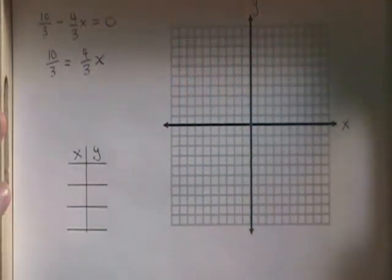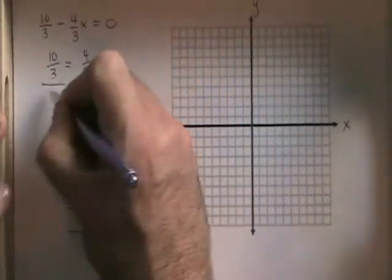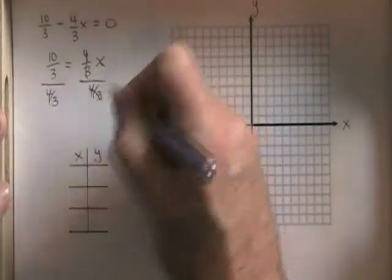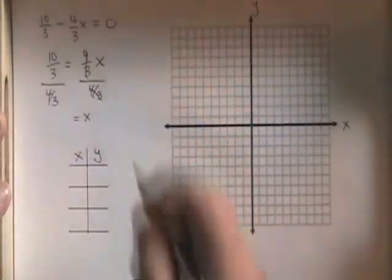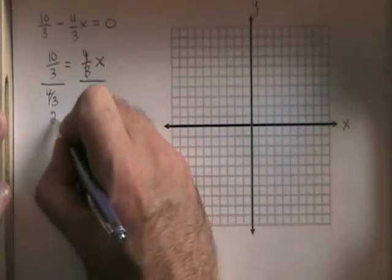Now, if I divide both sides by four thirds, these will cancel. My x is isolated. And 10 thirds divided by four thirds is 2 and a half.